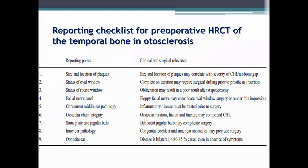Before going to CT scan grading of otosclerosis, I will talk about the reporting checklist for preoperative high resolution CT scan of temporal bone in otosclerosis. There are nine reporting points. The first one is the size and location of the plaques. The size and location of the plaques are very important because they may correlate with the severity of conductive hearing loss and the air-bone gap in the pure tone audiometric findings.